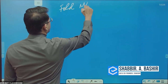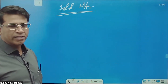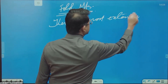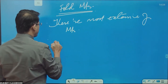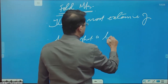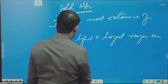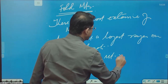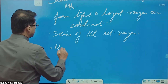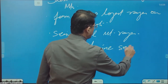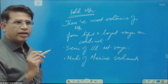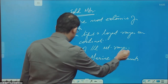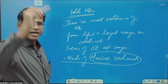We're talking about fold mountains. There are four or five features of fold mountains. These are the most extensive mountains — they form the highest and the longest ranges on the continents. These are a series of parallel mountain ranges. Very importantly, they are made of marine sediments.